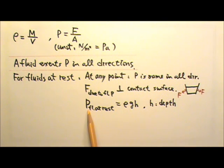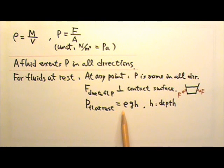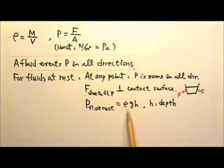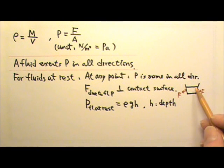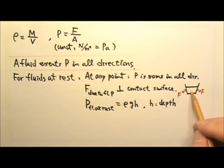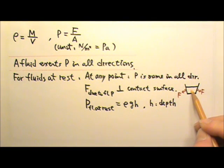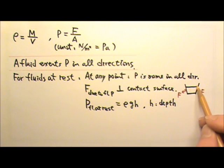The pressure produced by a fluid at rest is rho*g*h — the density times g times the depth. So we can use rho*g*h to find the pressure at any point produced by this fluid.